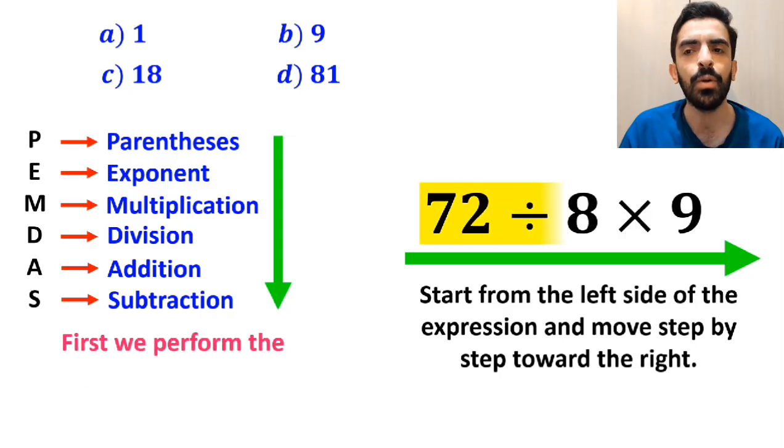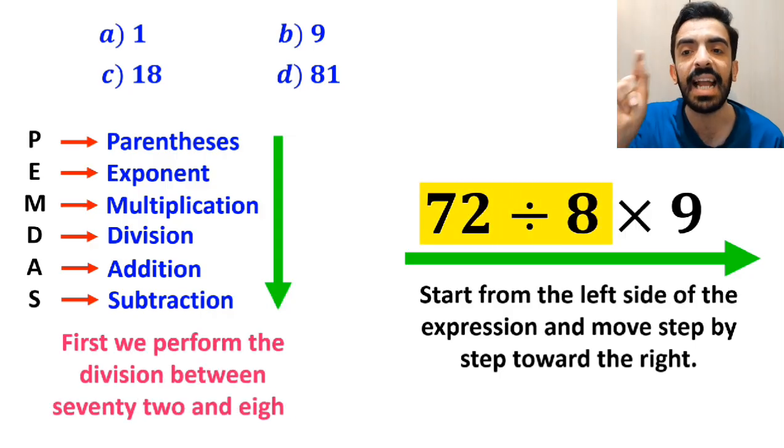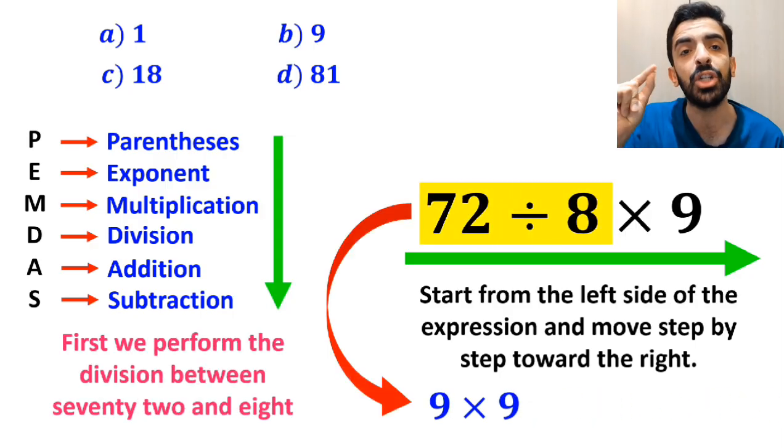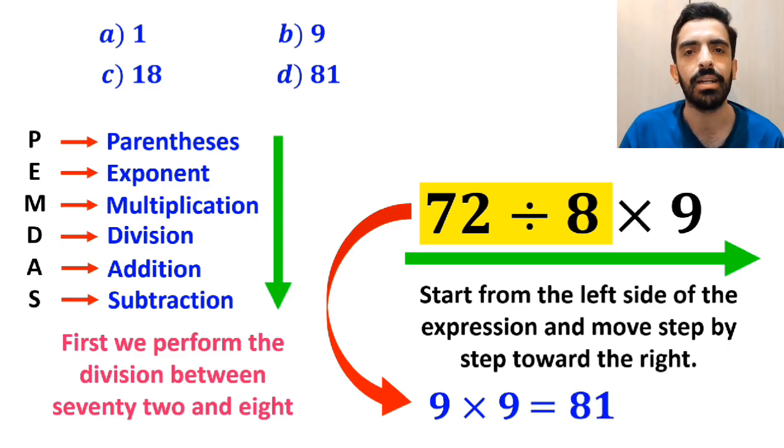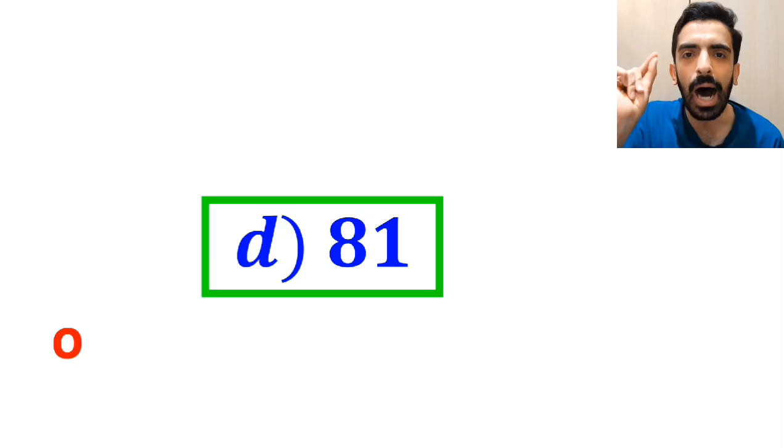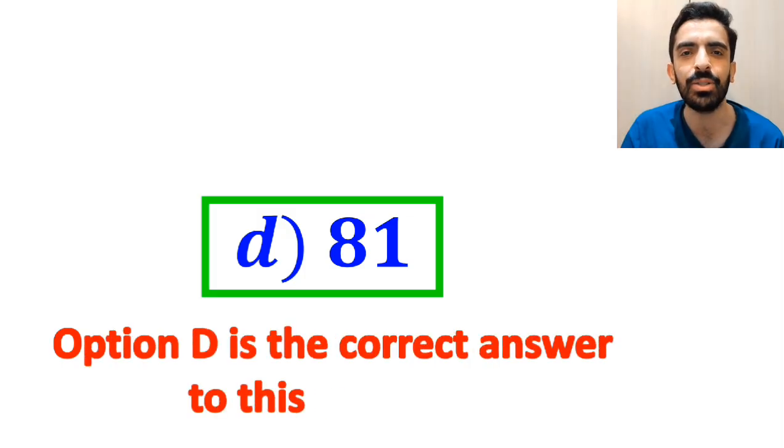So, first we perform the division between 72 and 8 which simplifies this expression to 9 multiplied by 9. Finally, the value of this expression will be 81. Therefore, option D is the correct answer to this question.